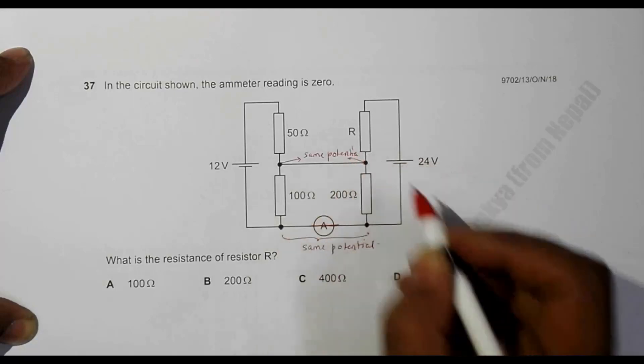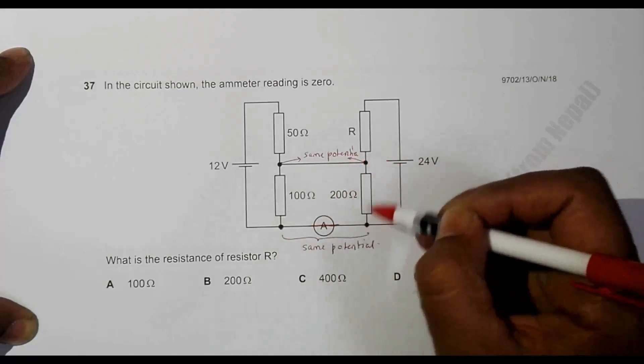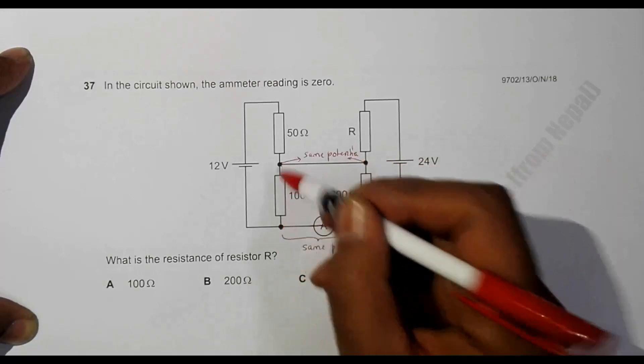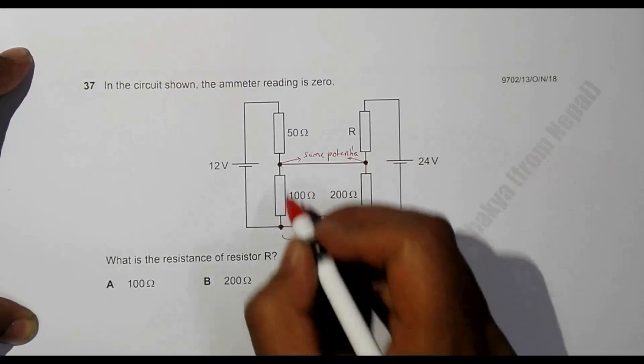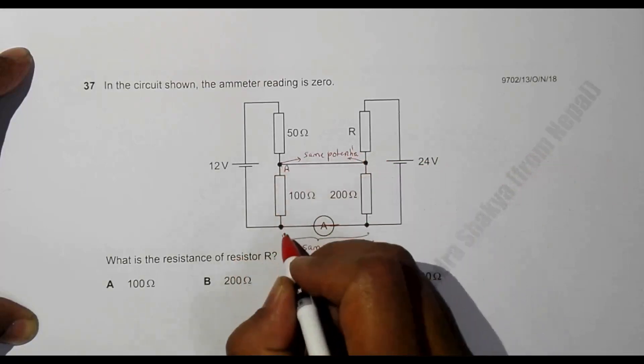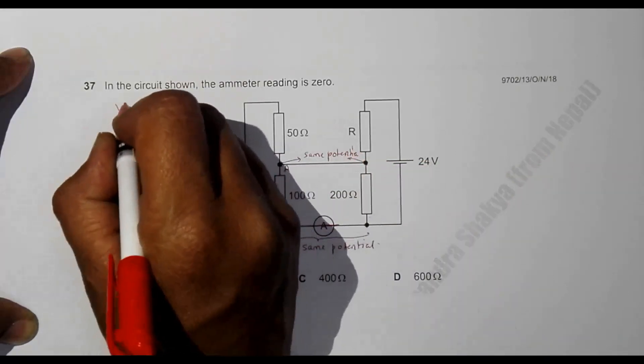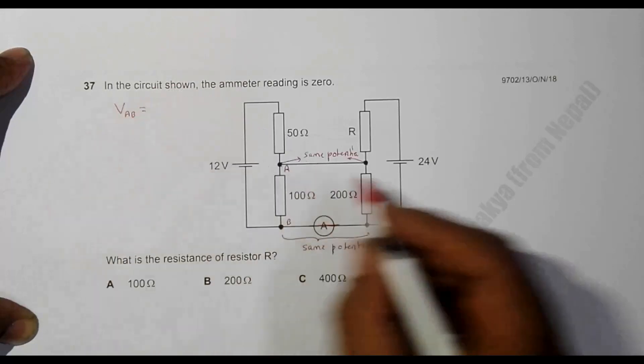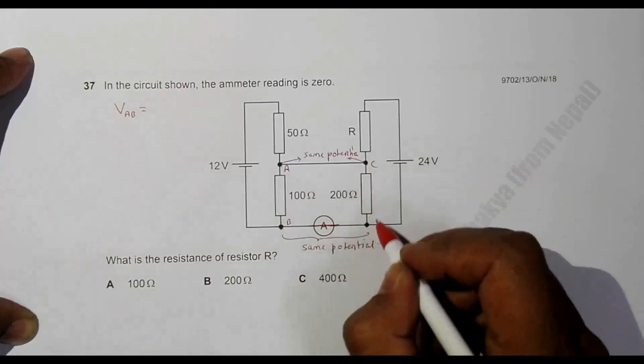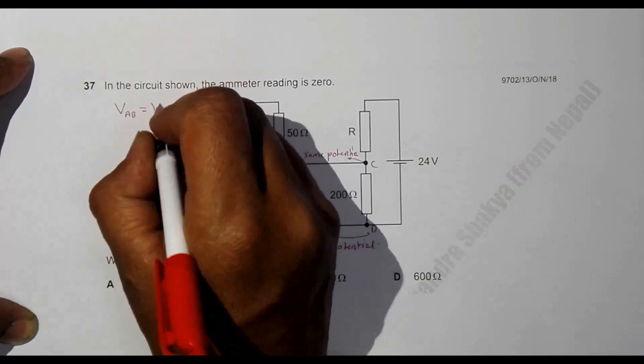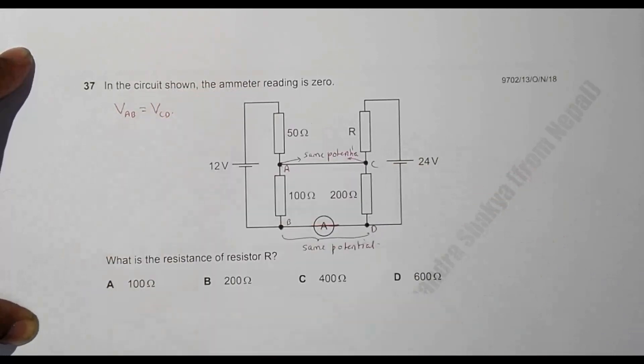That means the PD here, the PD here, and the PD here should be equal. So the PD between point A and B, VAB, should be equal to the PD VCD. Ammeter reading zero means that the PD here and the PD there should be equal.